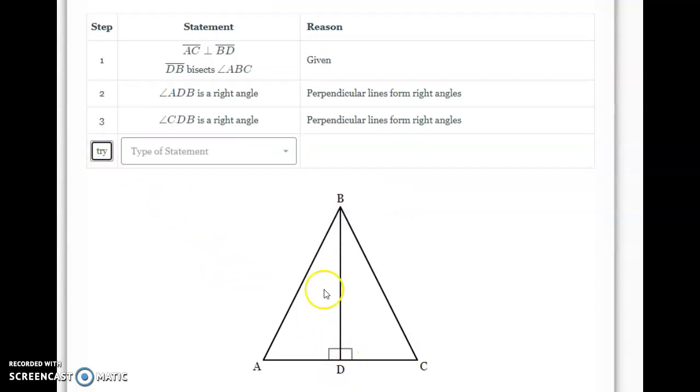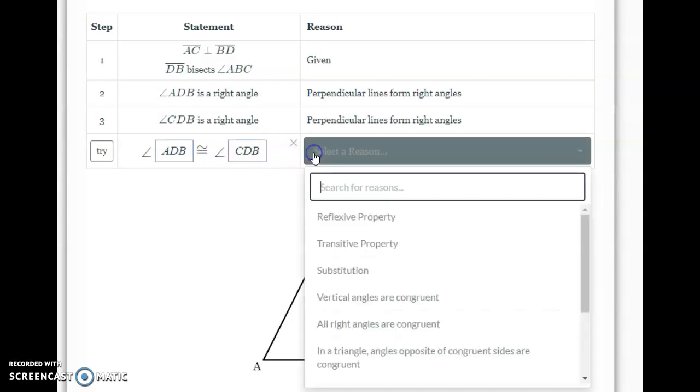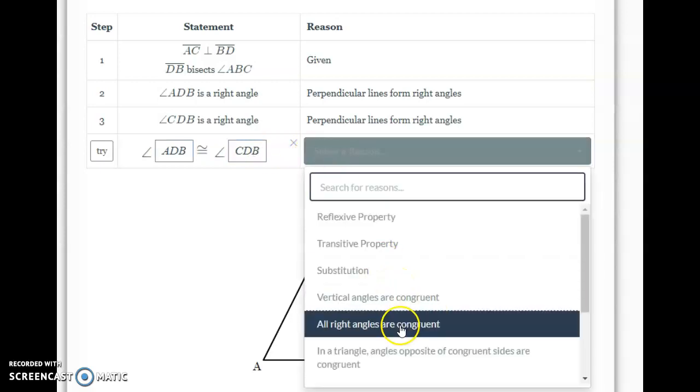Now that I've proven that those are both right angles, I can say that they are congruent to each other. And that is because all right angles are congruent.